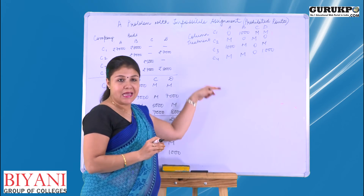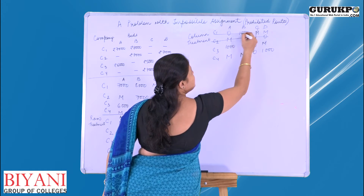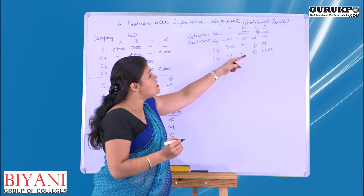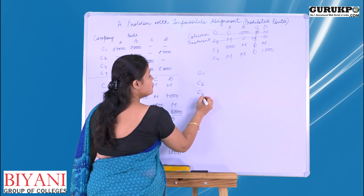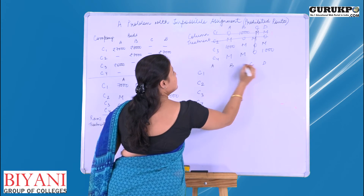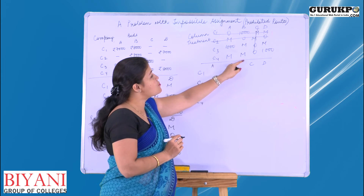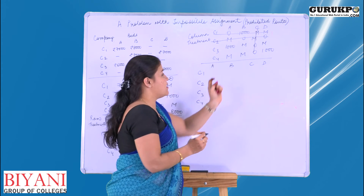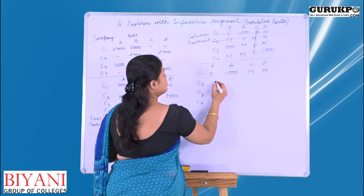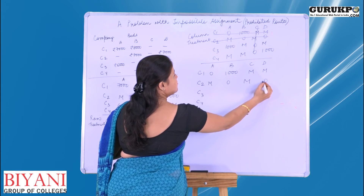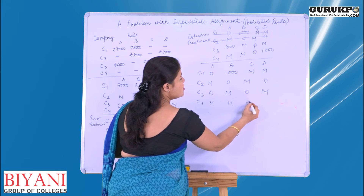Now we will draw the minimum number of lines to cover all zeros as per our requirement. The maximum zeros are: two 0s here, two 0s here, and one 0 here. The next step is to select the least entry from the entries not covered by the lines. We subtract this least entry from all uncovered cells and add it at the intersecting points. The updated values give us 0, 0, M, M, M, 0, and 0.